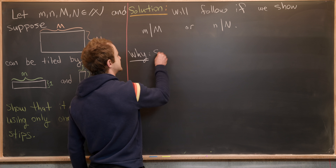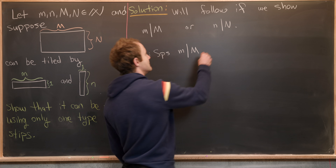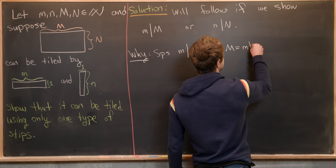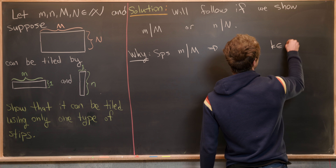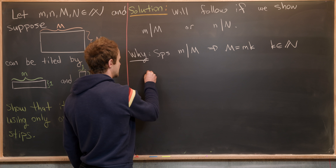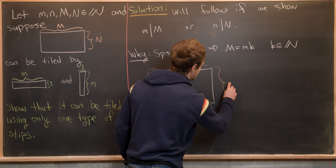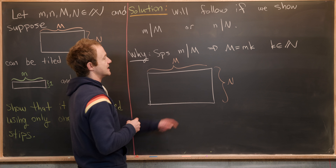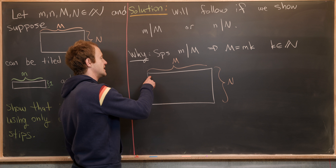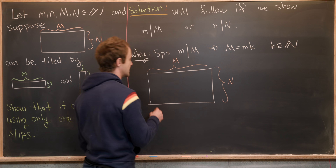Let's see why that's true by looking at a picture. If little m divides capital M, then capital M equals little m times k, where k is some natural number. Taking our capital M by capital N rectangle, this relationship tells us we can fill one of its rows with exactly k horizontal strips.